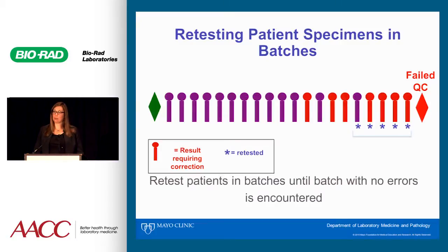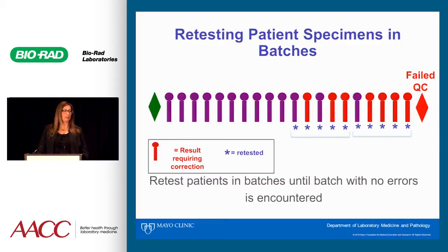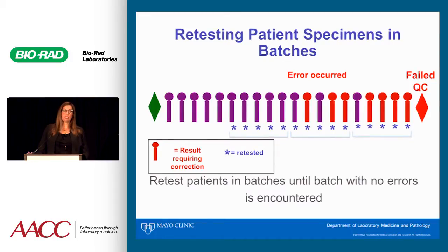In our laboratory, we retest in batches of 10 patient specimens — that's not a magic number, but it's something that has worked for us. In the first batch, if we retested five patients and four out of five results needed to be revised, we would go back five more. A batch of at least 10 is recommended to avoid missing errors. In one example, three out of five needed correction, so we went back another five, and none of those results needed revision. That tells us the error occurred somewhere in that time frame, and the risk of incorrect results before that point becomes quite low.